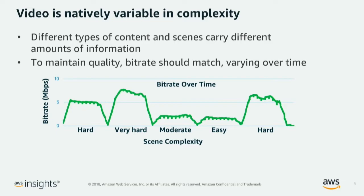Then we could imagine a scene that's moderate or easy — perhaps very much like this scene right now, where it's a single speaking individual, a close-up of their face, no panning whatsoever, and just not a lot of motion. So not very many bits are necessary to deliver that scene at the quality target. In order to encode this video, we want a rate control mode — rate control being the term for how we instruct the encoder to behave over time — that can really follow that quality curve throughout the video.